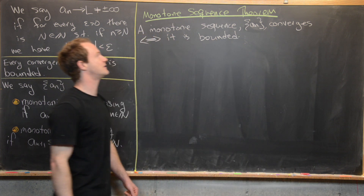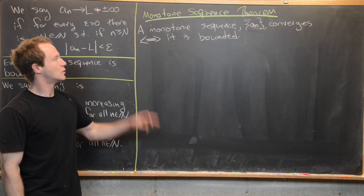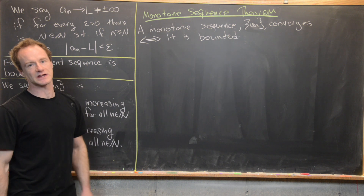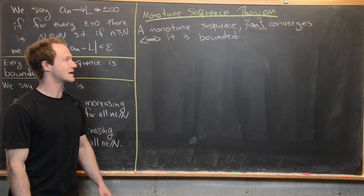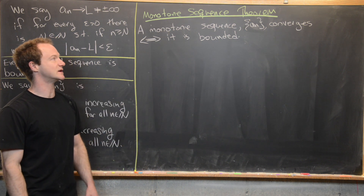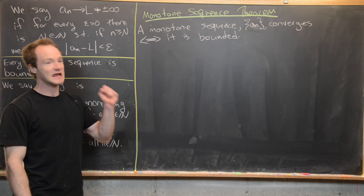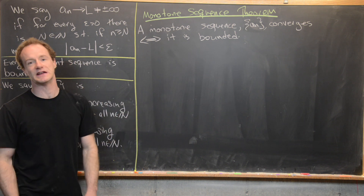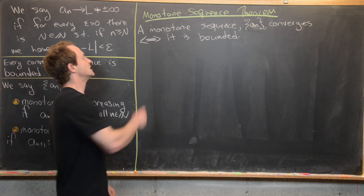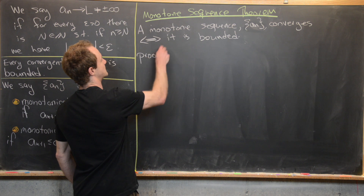We want to prove the monotone sequence theorem, which is an if and only if statement. It says that if you've got a monotone sequence a_n, it converges if and only if it is bounded. Let's go ahead and see this proof.